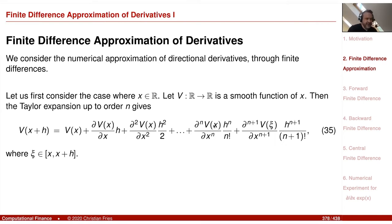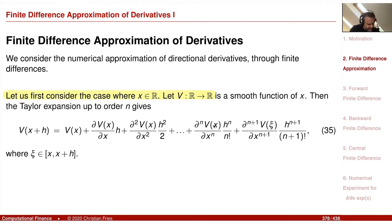I consider here just a function of a single variable x in ℝ; the generalization to multiple variables is clear. Let us consider the case where x is in ℝ and I have a function v from ℝ to ℝ. I assume the function is sufficiently smooth so I can differentiate it. Let's look at the Taylor expansion — given sufficient smoothness, a Taylor expansion up to order n.